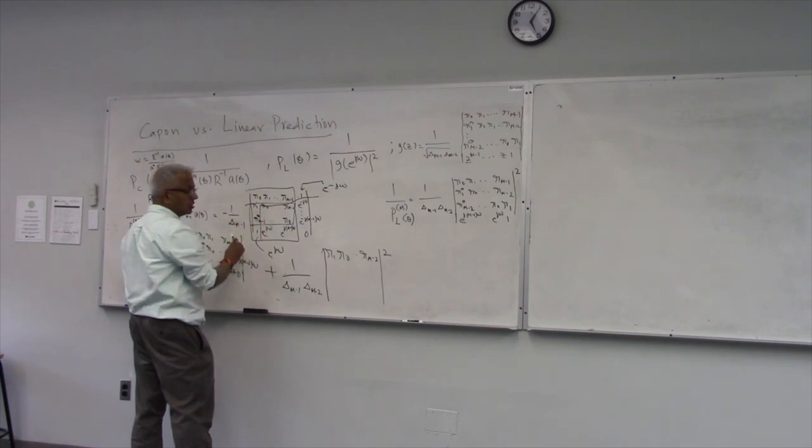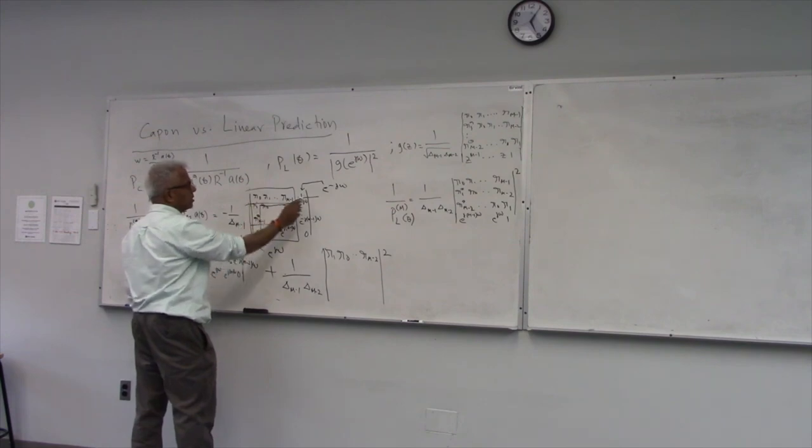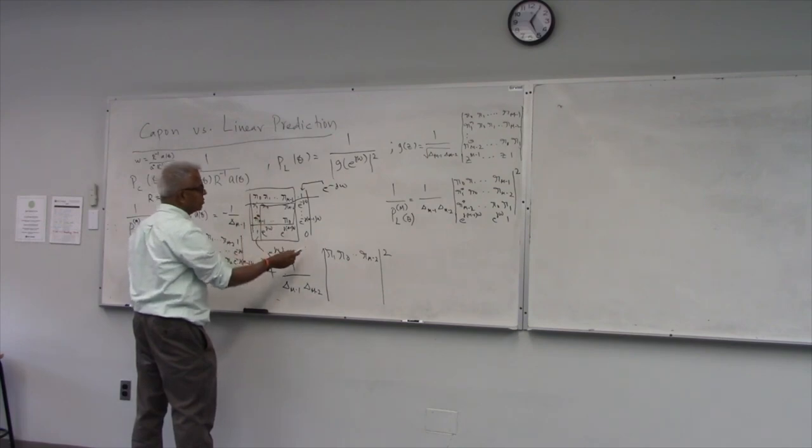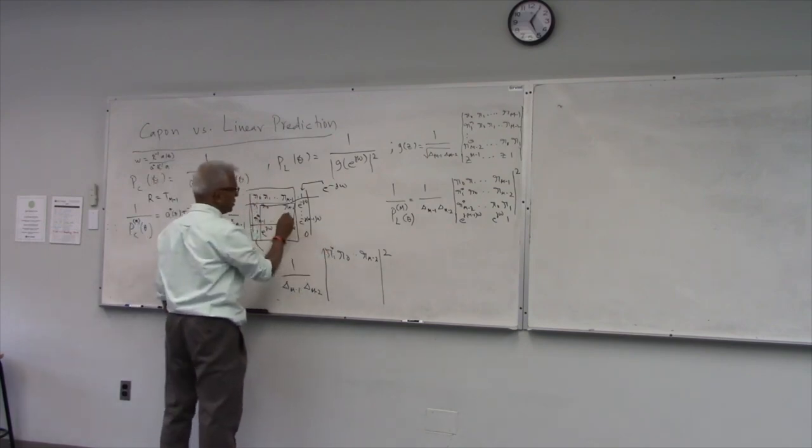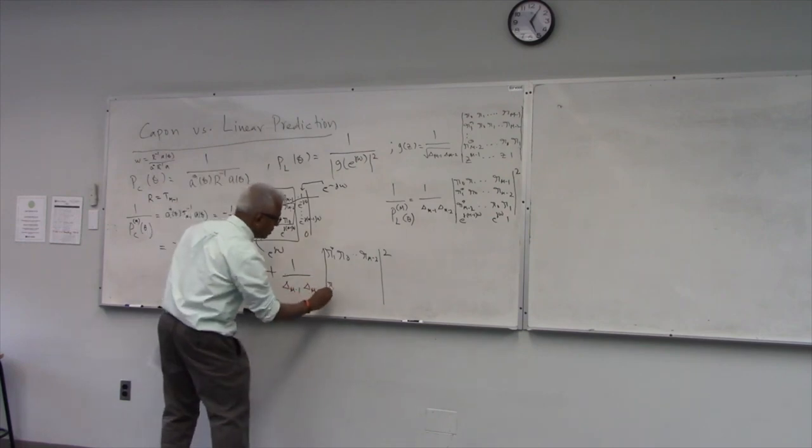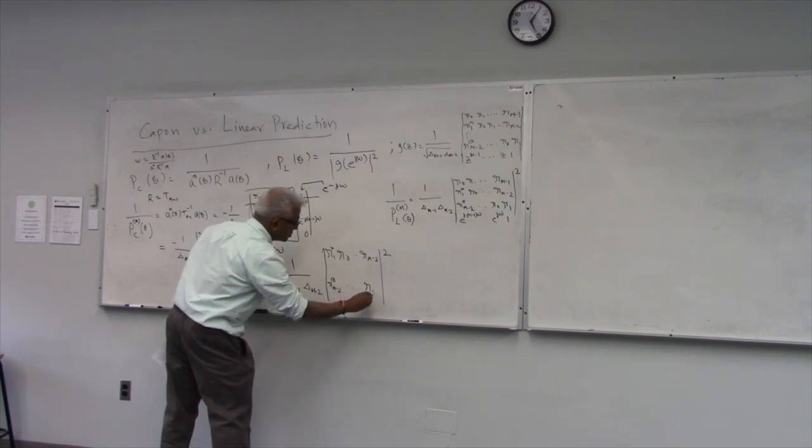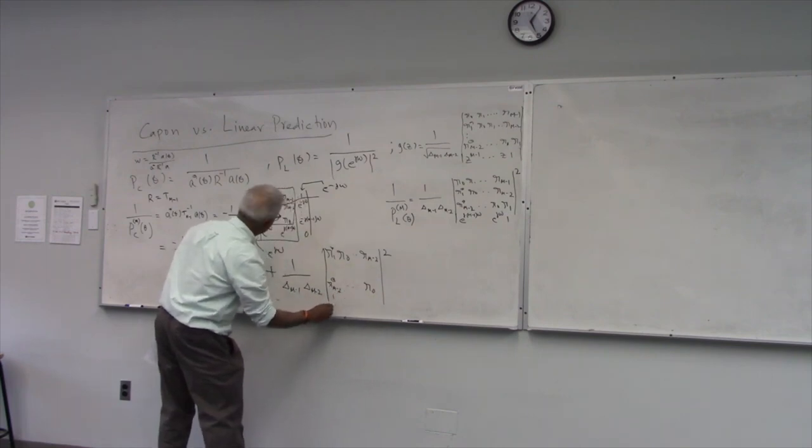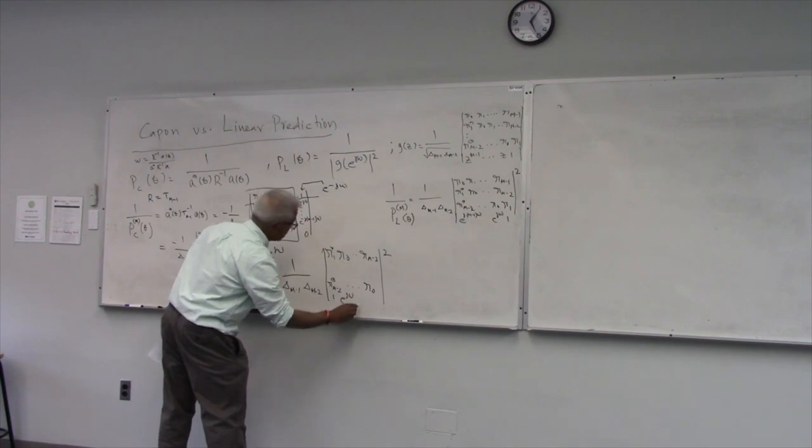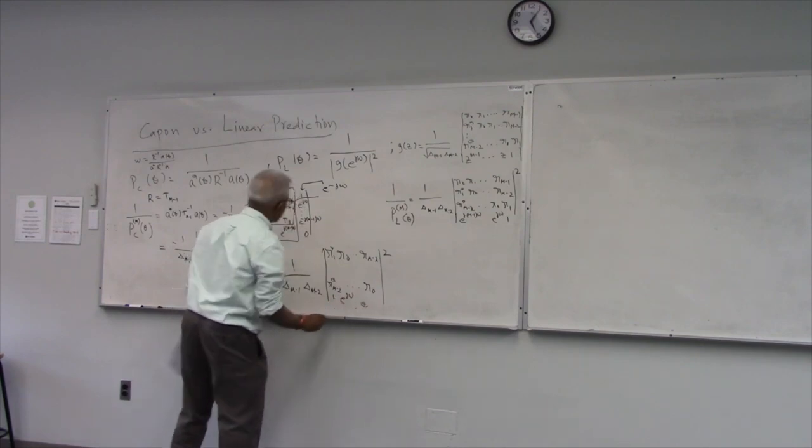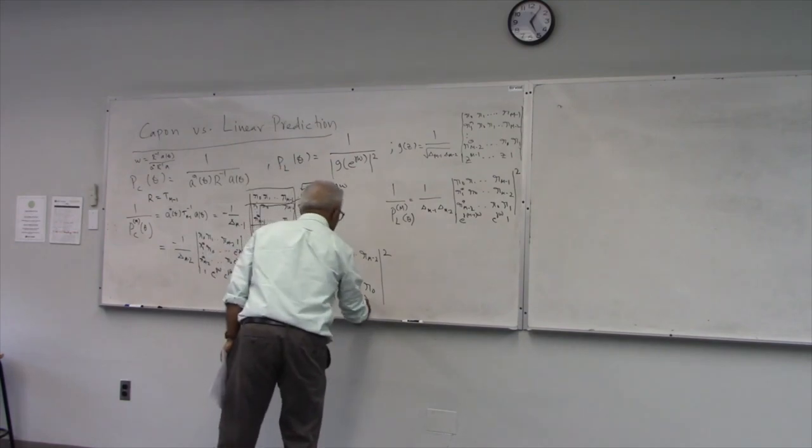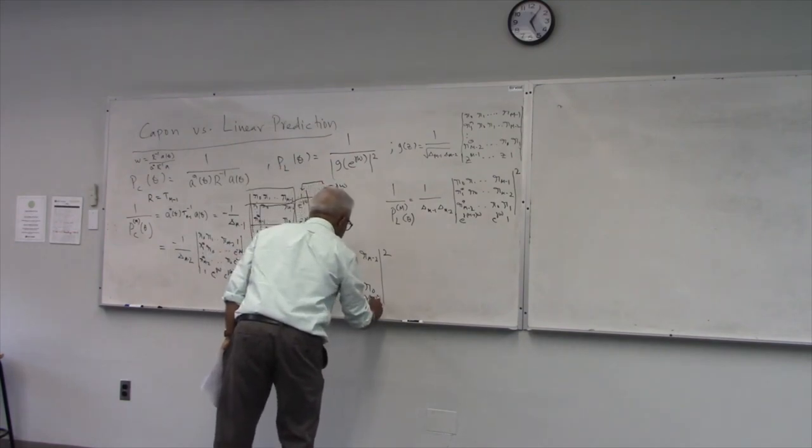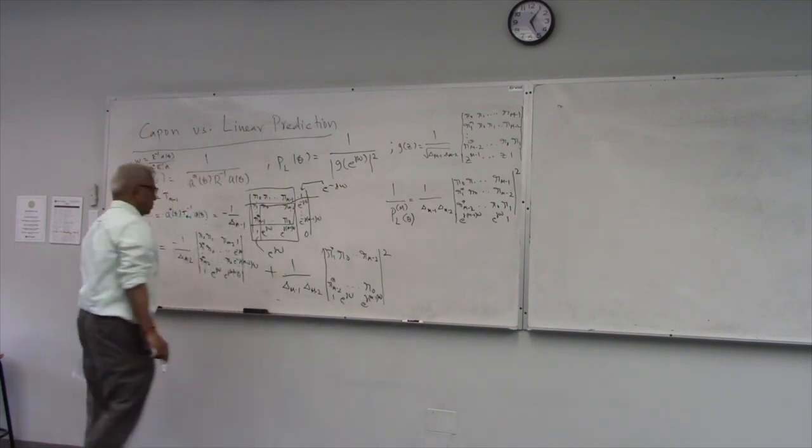So let me write down one piece, which is south-west. So I am just copying, you remove the first column and the last column. So that's going to be r1 star, r0, etc., up to rm minus two. And here you have rm minus two star, etc., up to r0. Then you have 1 e raised to j omega, up to e to the power jm minus one omega.